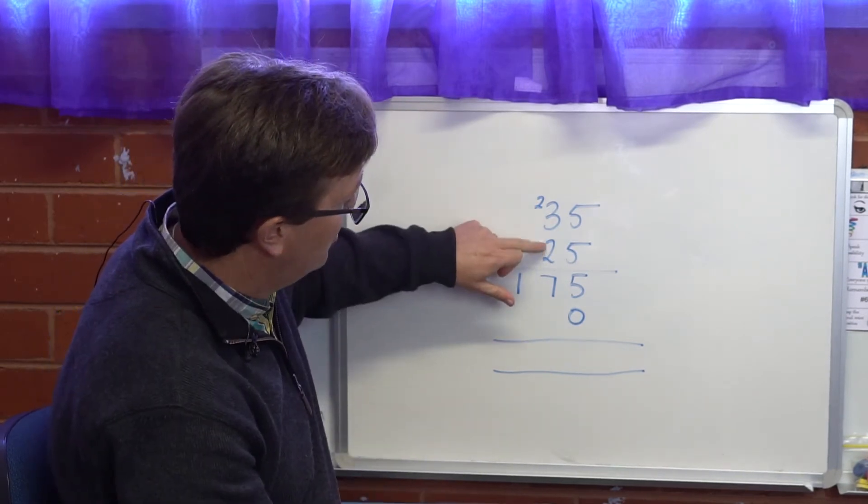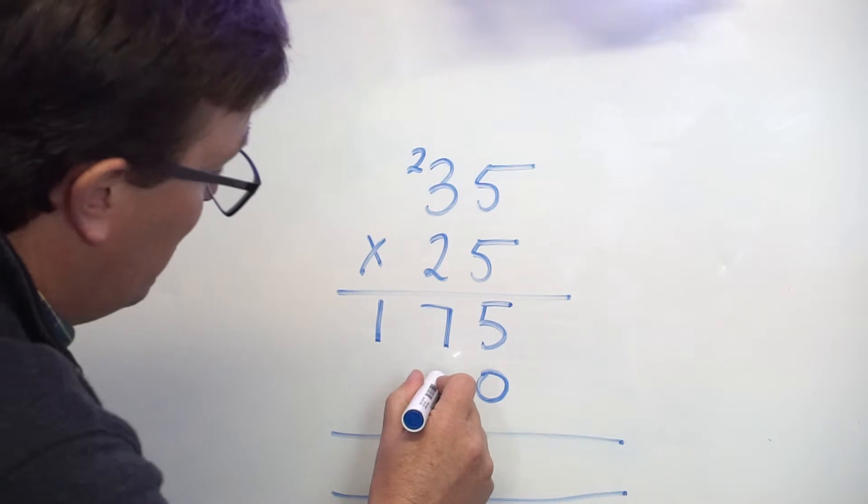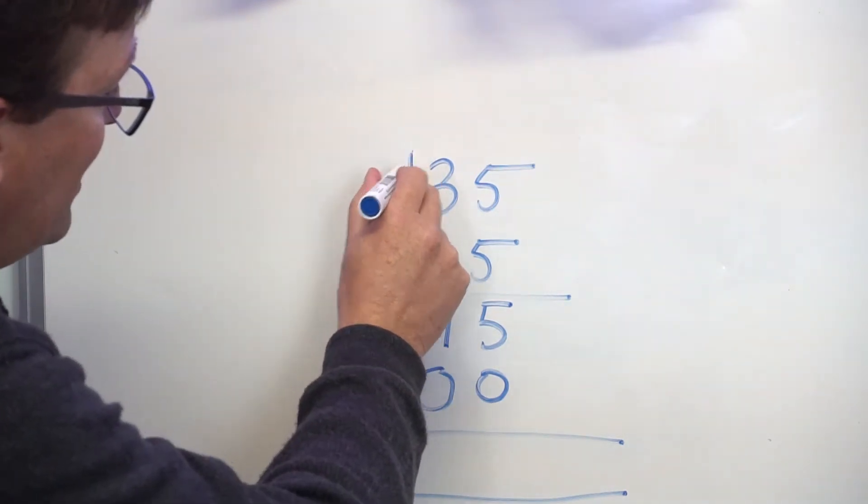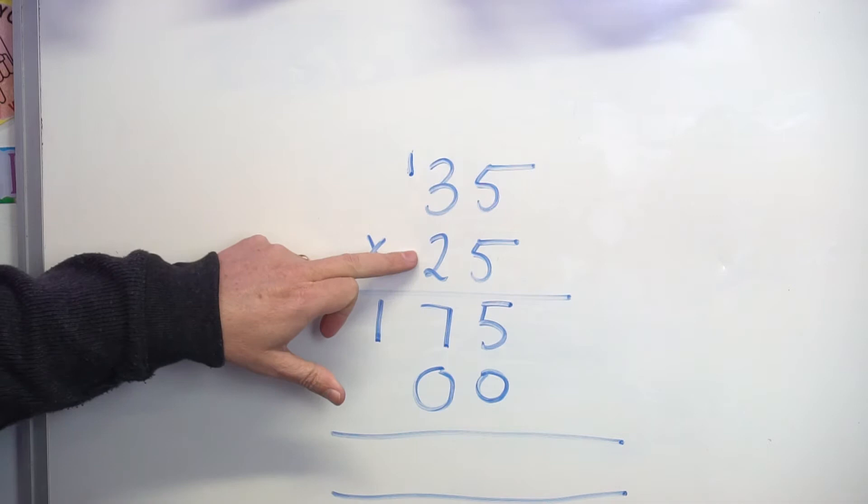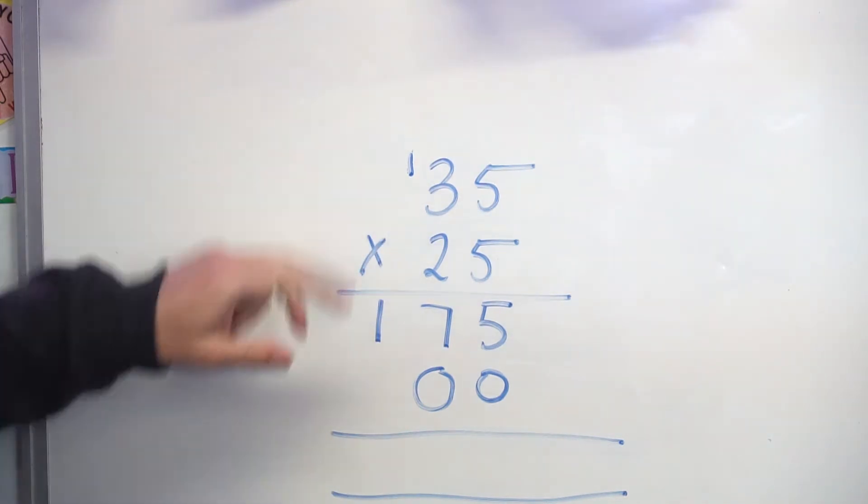So I go again. 2 times 5 is 10, put my 0 in there, carry my 1 into the tens column. 2 times 3 is 6, plus 1 is 7.